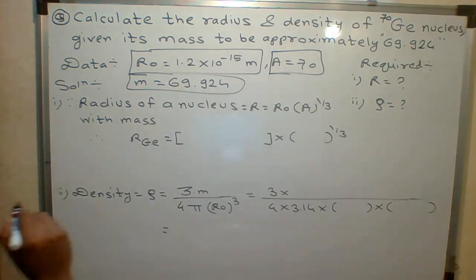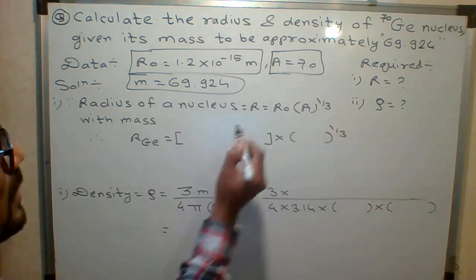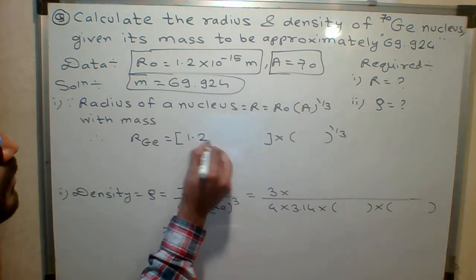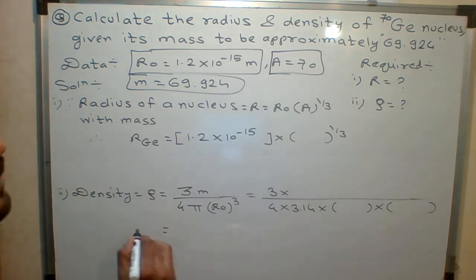What is the question? Find the radius of the nucleus. You know the formula for radius: R = R0 × A^(1/3). The value of R0 is 1.2 × 10^-15, and A is 70.